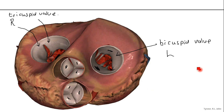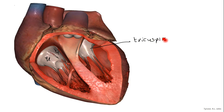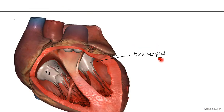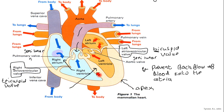Going back to the diagram, there are a couple more labellings to add. The heart has a sort of point to it - this is known as the apex of the heart, the tip or base of the heart. It also has a muscular wall that divides the left side from the right side of the heart, and that's called the septum.